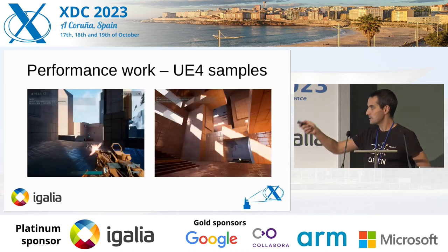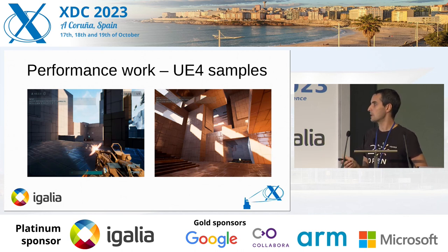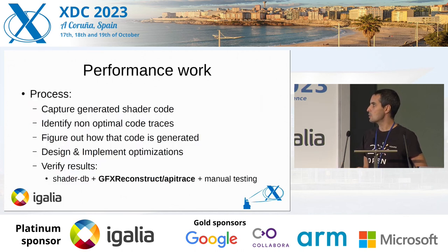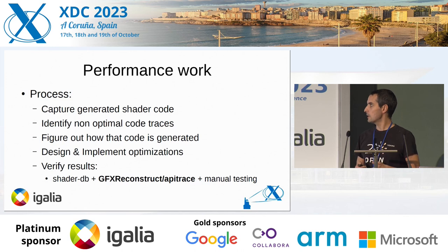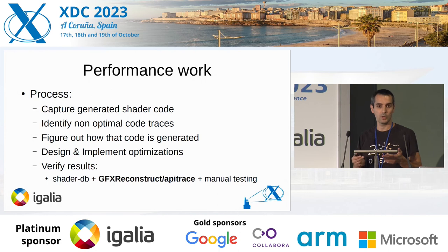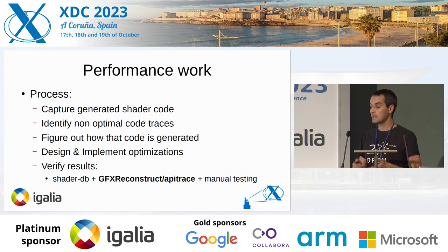This is rendered by the Raspberry Pi 4 — this is one of the Unreal Engine samples. So the process at that time was: we get the sample running, we captured the SPIR-V code, we identified non-optimized code traces, we figured out what we could do to improve that, implemented an optimization, and then we needed to verify the outcome.